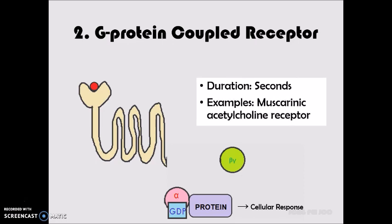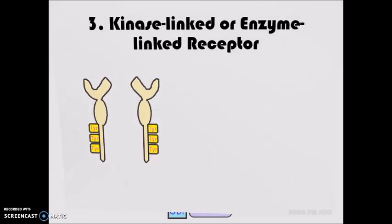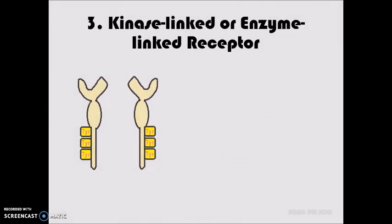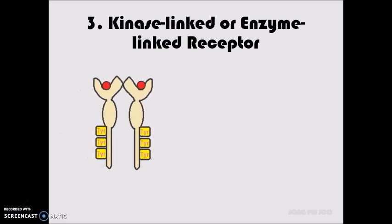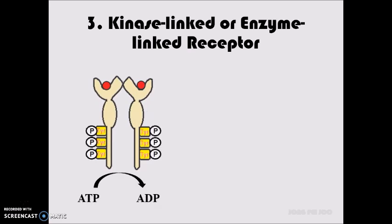The kinase-linked or enzyme-linked receptor consists of two parts, extracellular receptor domain and intracellular kinase domain. The binding of ligand to the receptor causes conformational change and activation of kinase which phosphorylates the tyrosine.